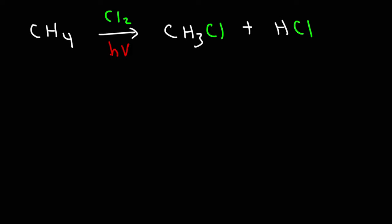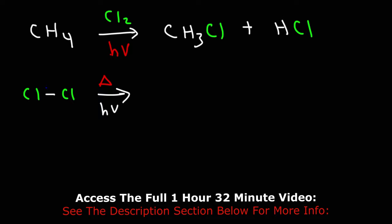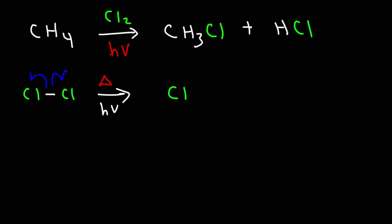Now let's talk about the mechanism. The first thing that happens is we generate two radicals — this is the initiation step. We can add heat or ultraviolet light, and the Cl–Cl bond undergoes homolytic cleavage to give two chlorine radicals. Chlorine actually has seven valence electrons, but going forward I'll just write one dot to indicate it's a chlorine radical. That's the first step — initiation — we need to generate the radicals.